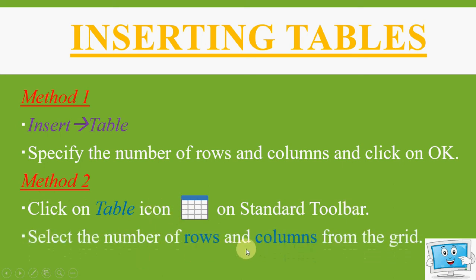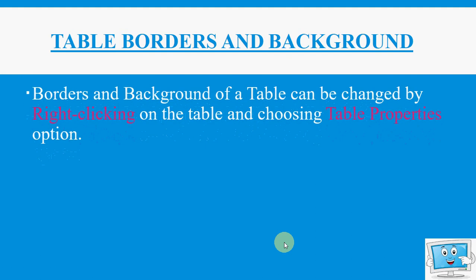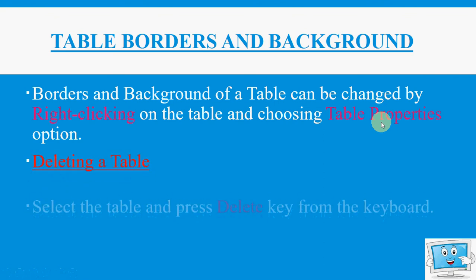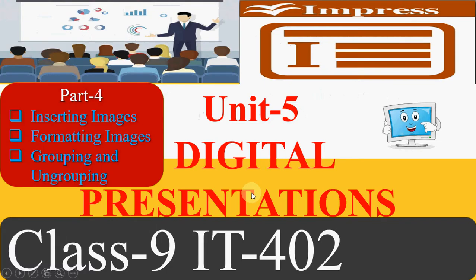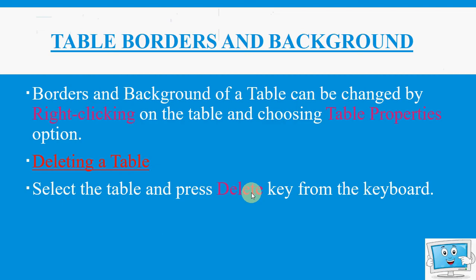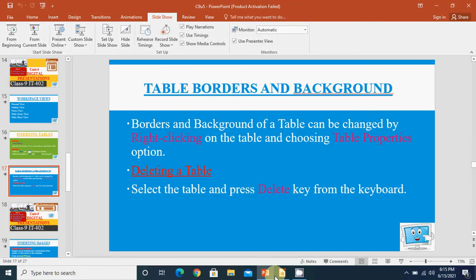Method two: click the Table icon on the standard toolbar, and from the grid that appears select the number of rows and columns. If you want to change the borders or background of a table, right-click on the table and choose 'Table Properties'. To delete a table, first select the table and then press the Delete key from the keyboard.